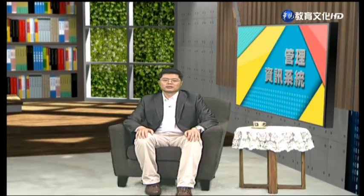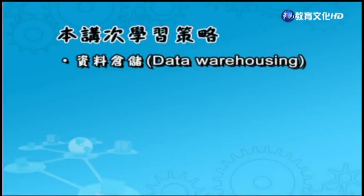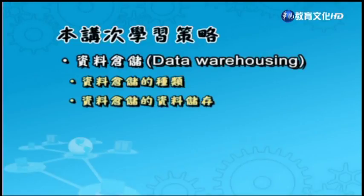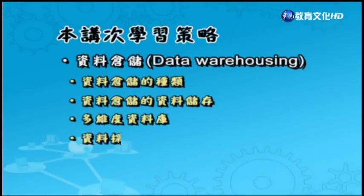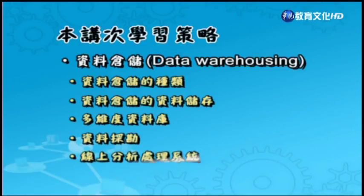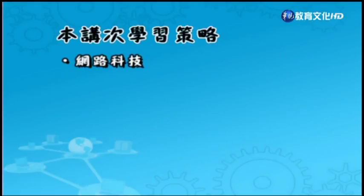接下来我们来了解一下本讲次学习策略，主要分成两个部分，分别是资料仓储与网路科技。资料仓储会介绍到资料仓储的种类、资料仓储的资料储存、多维度的资料库、资料探勘、线上分析处理系统。网路科技则包含网路发展史、网路分类，还有通讯协定。